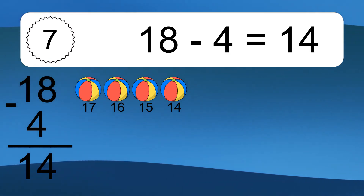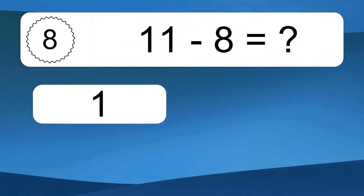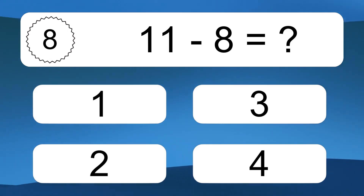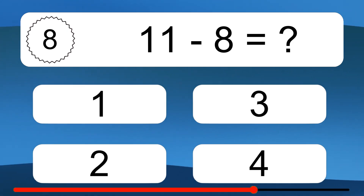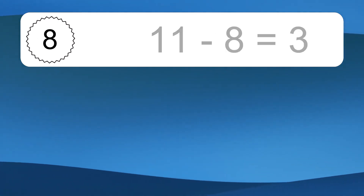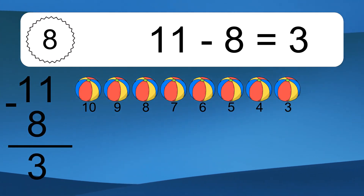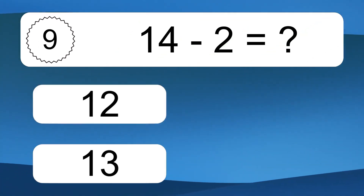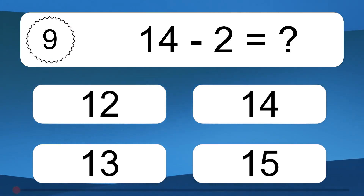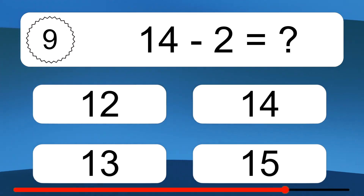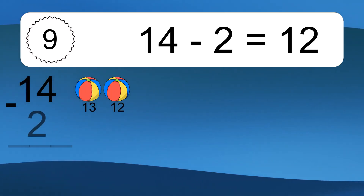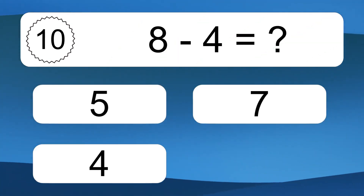11 minus 8 equals what? 11 minus 8 equals 3. Let's count it: 10, 9, 8, 7, 6, 5, 4, 3. 14 minus 2 equals what? 14 minus 2 equals 12. Let's count it: 13, 12.